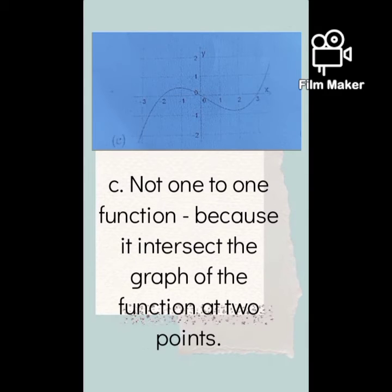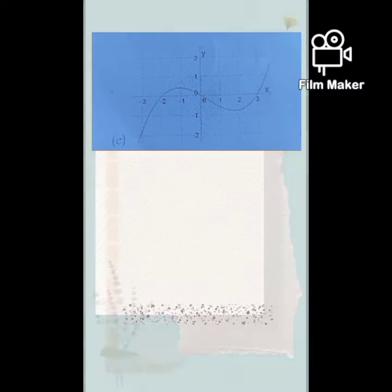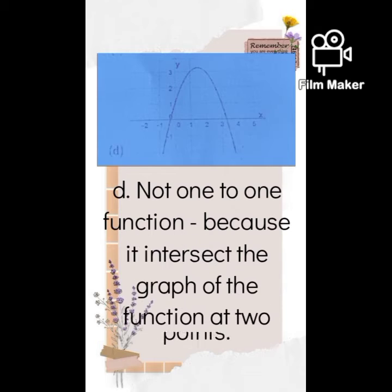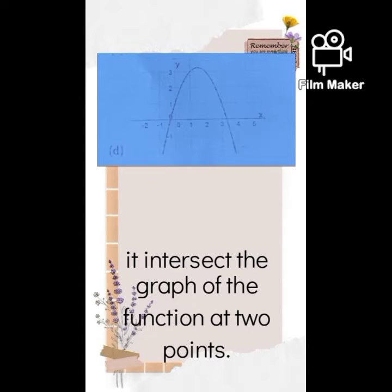Letter C is not a one-to-one function. Letter D is a one-to-one function — same reason as letter C because it intersects the graph of the function at two points.